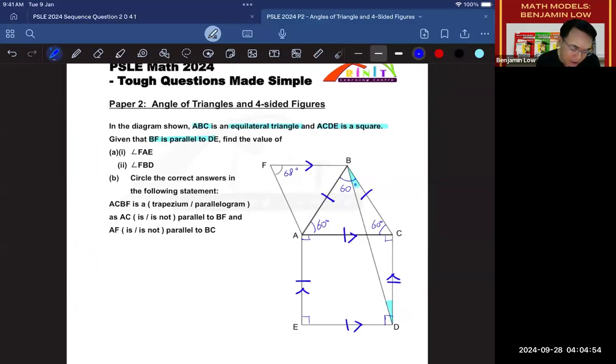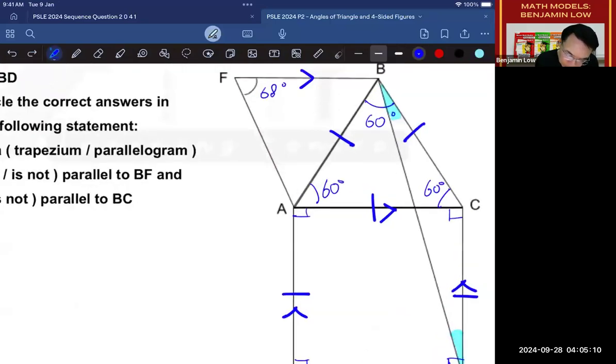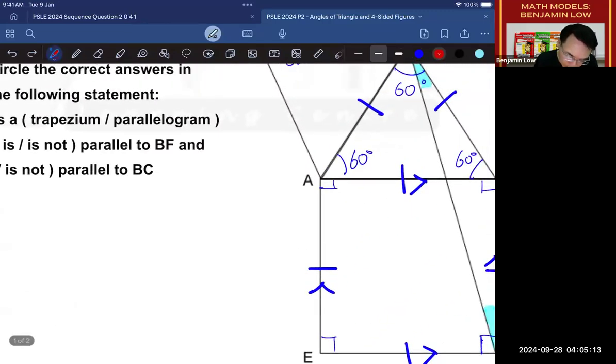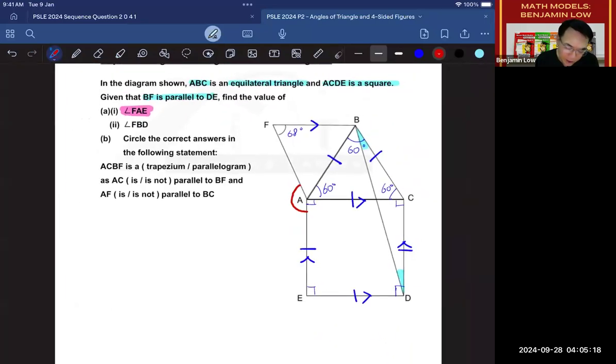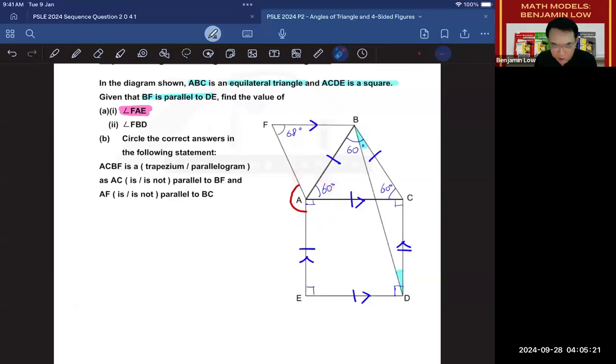Now, the first question is asking us to find the value of angle FAE. So where's FAE? Well, FAE is over here, and this is the angle they are asking us to find. I'm just going to use a different colour so you know what we are finding. So maybe you might be asking, why isn't it that we are finding this angle? Well, if they want us to find this angle, it is also called angle FAE, except that they will add the word reflex.